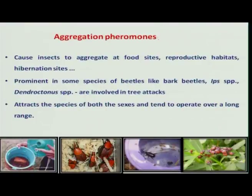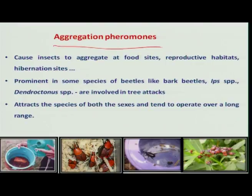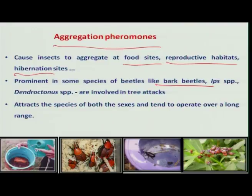In the case of pheromones, we have aggregation pheromones. These aggregation pheromones are produced by a group of insects. These insects aggregate for their food sites, for reproductive habitats, or even for hibernation purposes. These aggregation pheromones are much understood in the case of bark beetles.